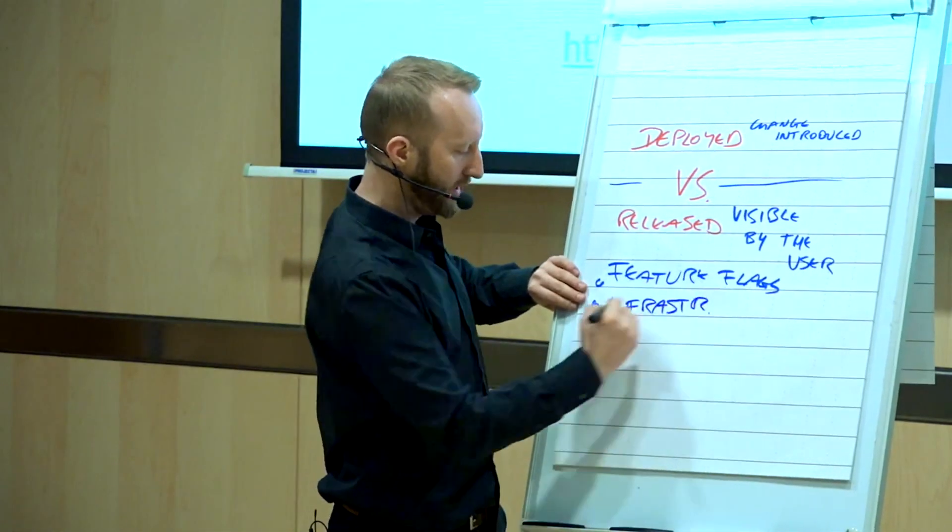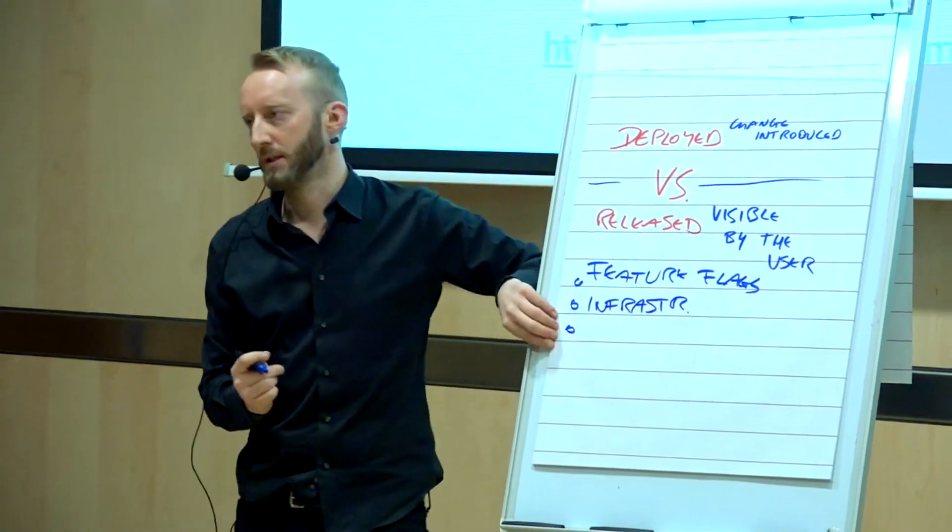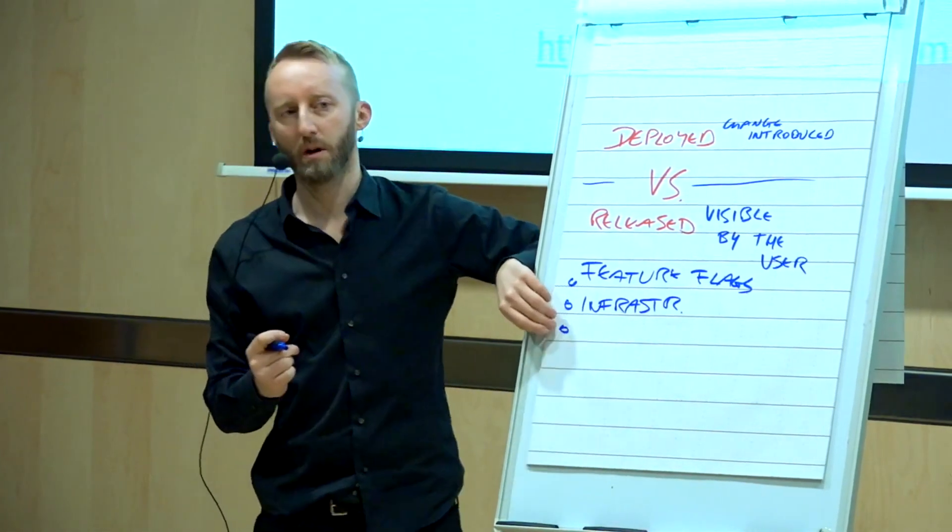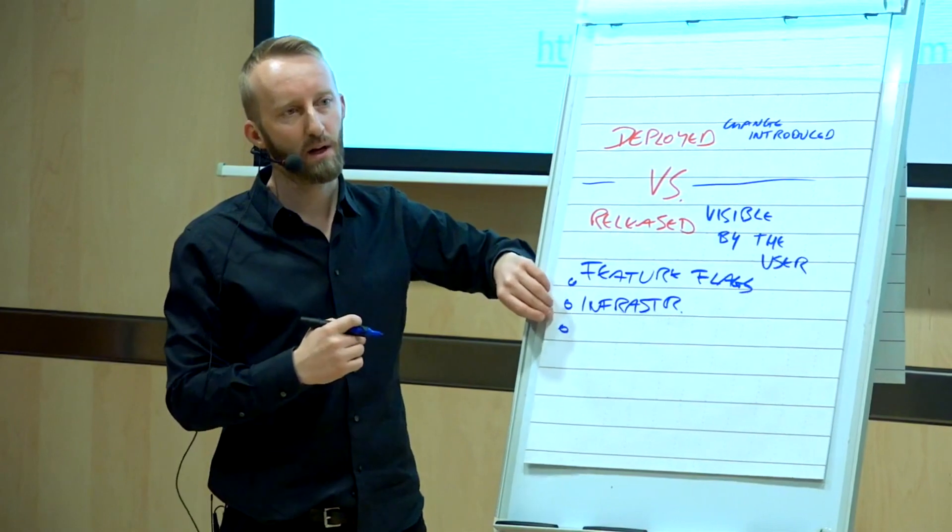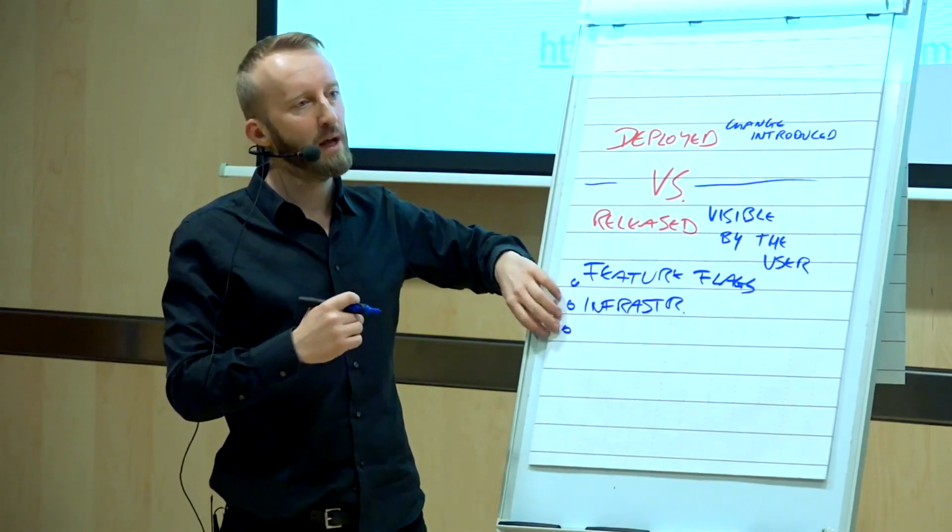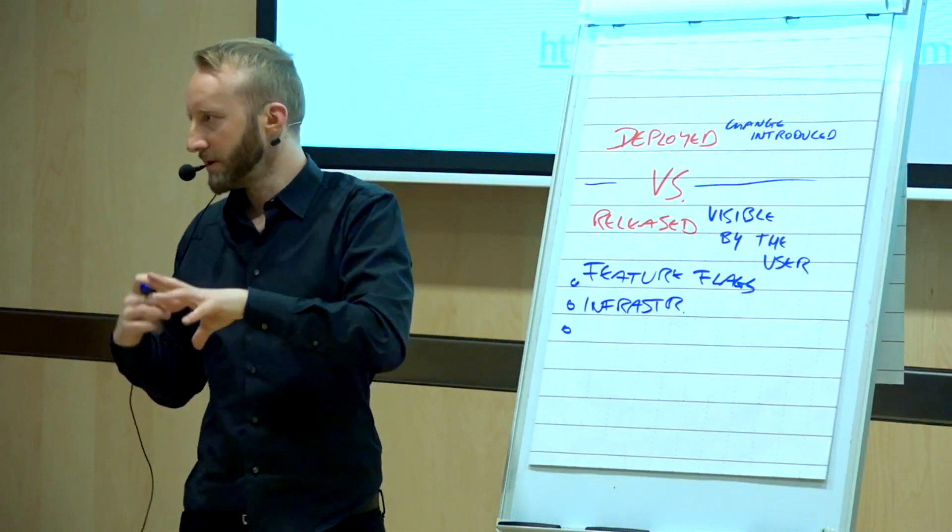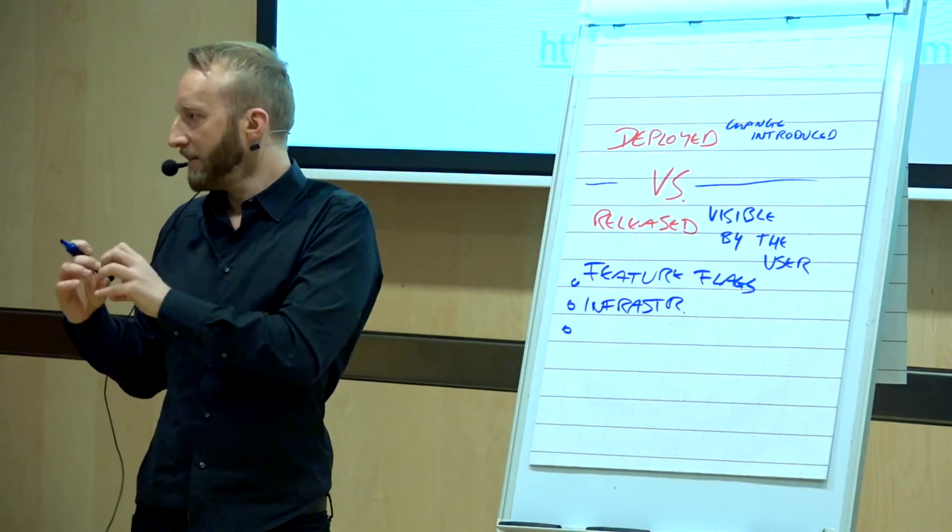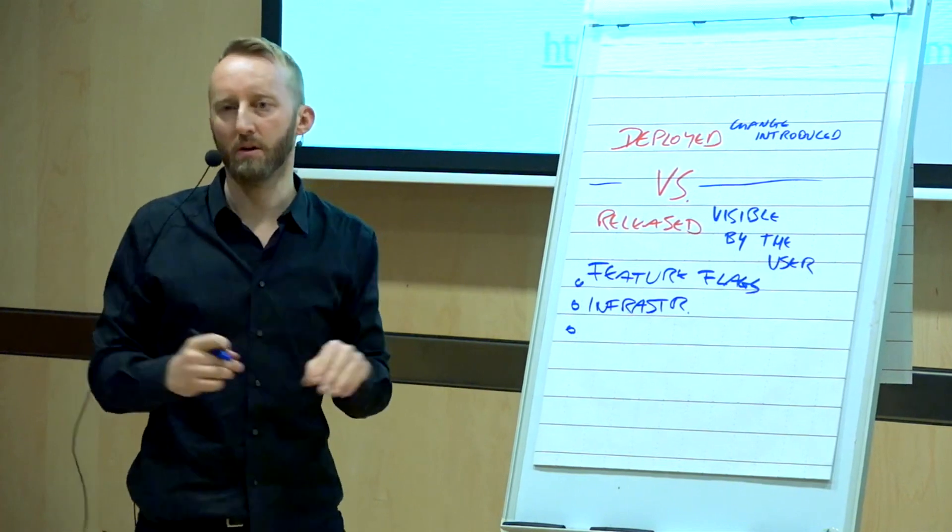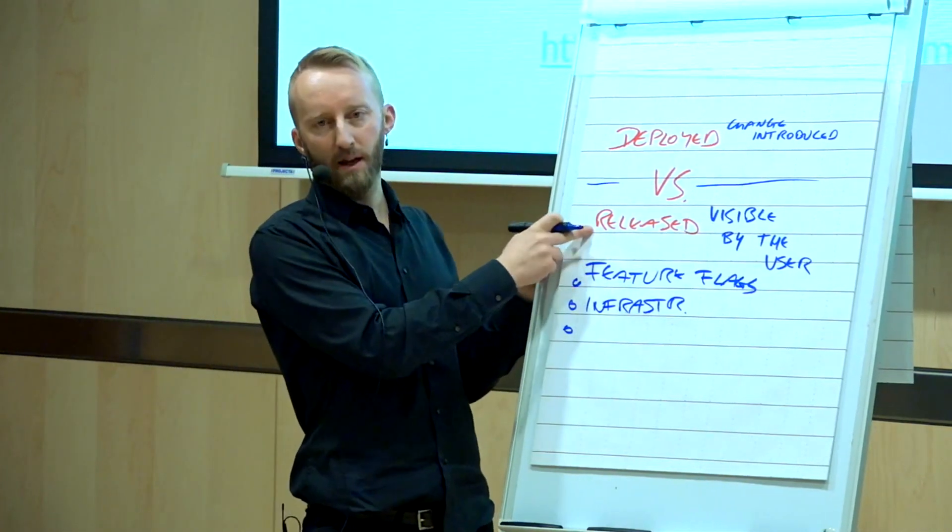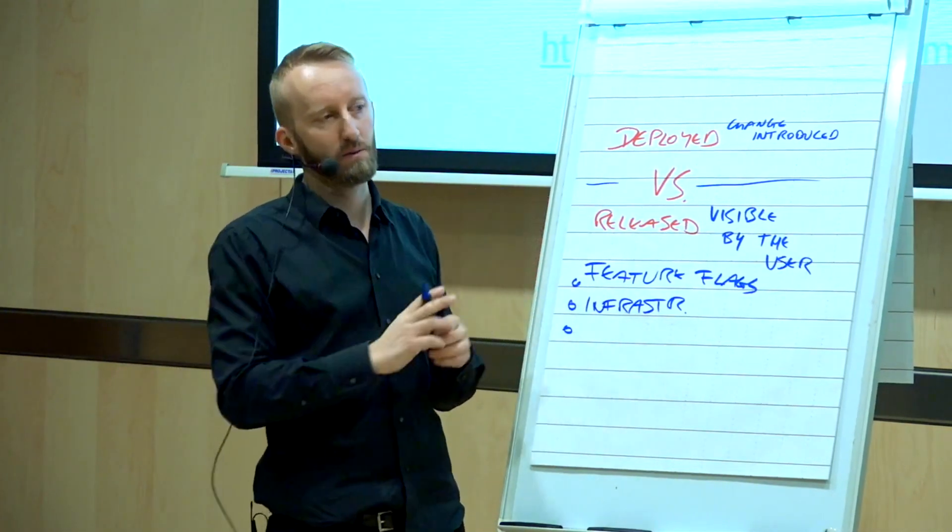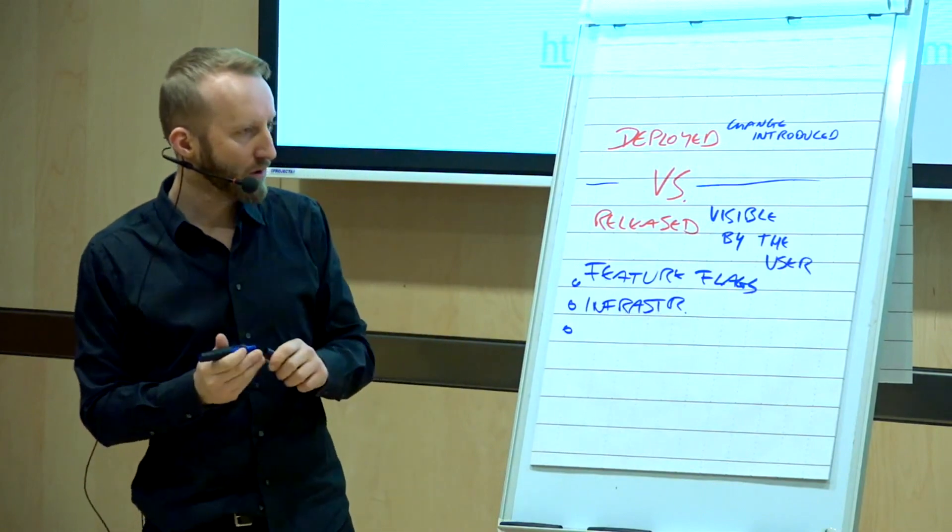And another option I see a lot is with a permission system. So usually in your applications you have some sort of a permission system, and in that permission system you create a group called alpha users or something like that. And those alpha users will always see all the features. Basically, you release everything to them and the other users will not see it. Cool.